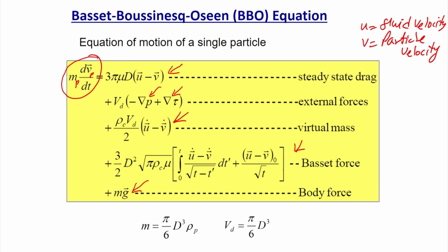To accurately track the position of a discrete phase, one should solve the BBO equation. Here m is mass of the particle: for a spherical particle, m = (π/6) × d_p³ × ρ_p, and V_d = (π/6) × d_p³ is the volume of the particle. This is the BBO equation used to find particle trajectory and motion.